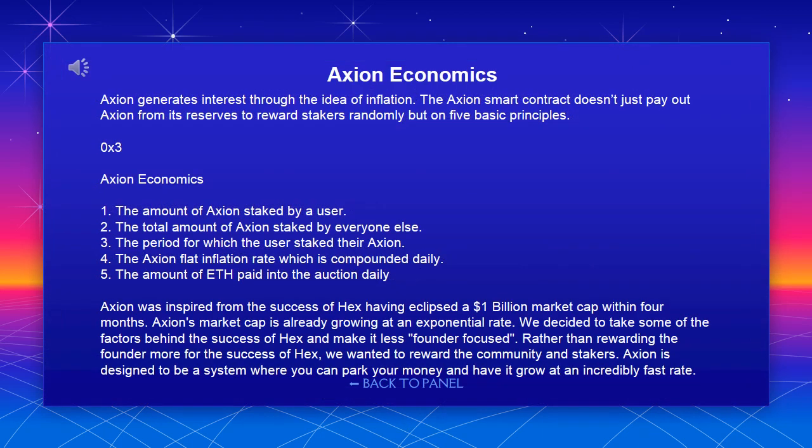Axion generates interest through the idea of inflation. The Axion smart contract doesn't just pay out Axion from its reserves to reward stakers randomly, but is based on 5 basic principles.